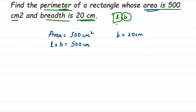Now I'll substitute the known value of breadth into the formula. Breadth is 20 centimeter, so: length × 20 centimeter = 500 centimeter square. We need to isolate the length on one side.